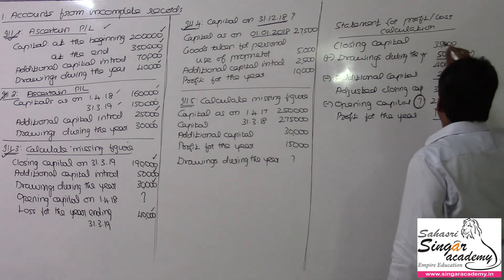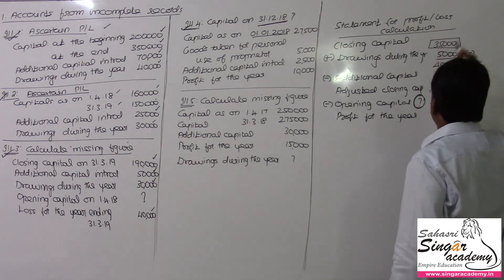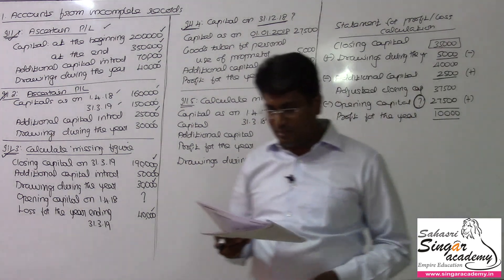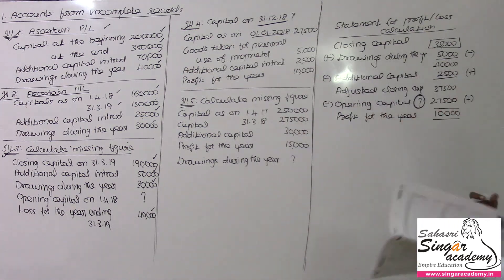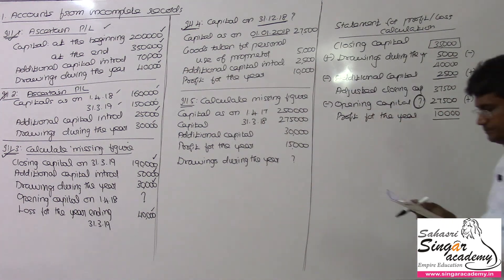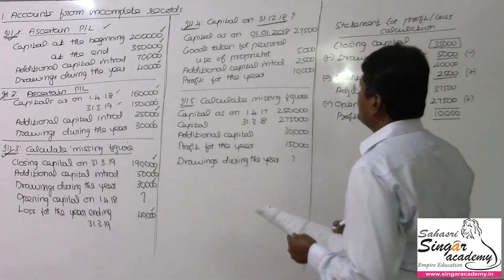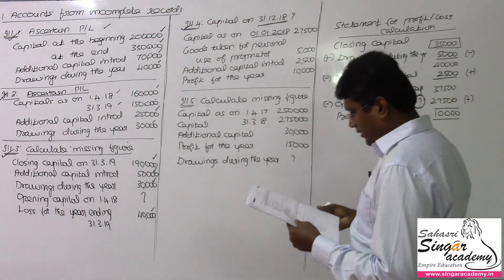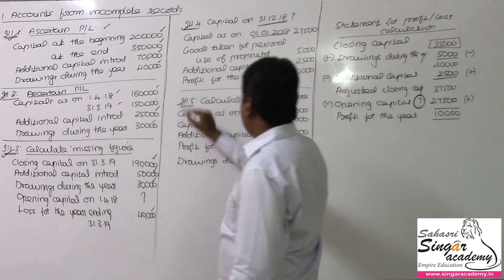Illustration number 4 — we have found this one. This is the answer — answer highlighted. I hope you could understand illustration number 4 also. 4th illustration is over. Now I am going for solving the 5th illustration.